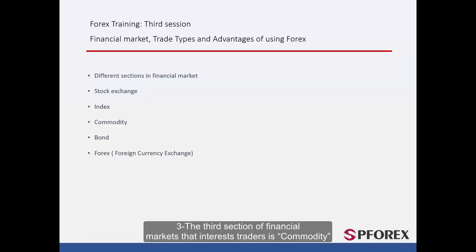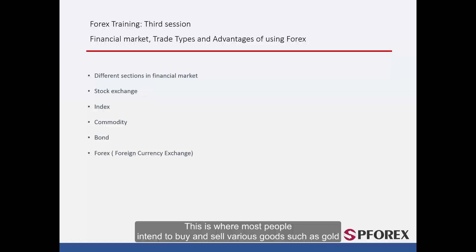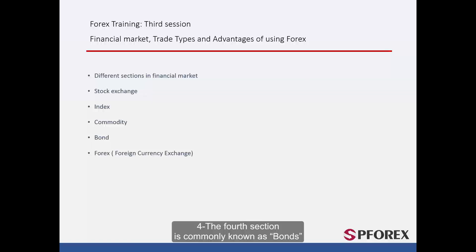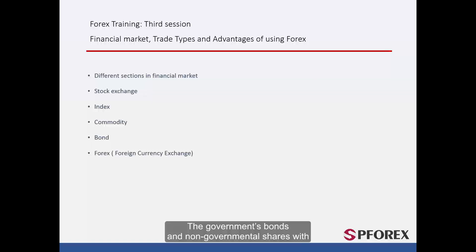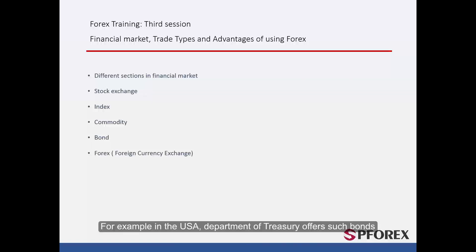The third section of financial markets that interest traders is Commodity. This is where most people intend to buy and sell various goods such as gold, silver, oil, wheat and so on. The fourth section is commonly known as bonds. The government's bonds and non-governmental shares, with or without fixed-rate security, are easy to purchase. For example, in the USA, the Department of Treasury offers such bonds.